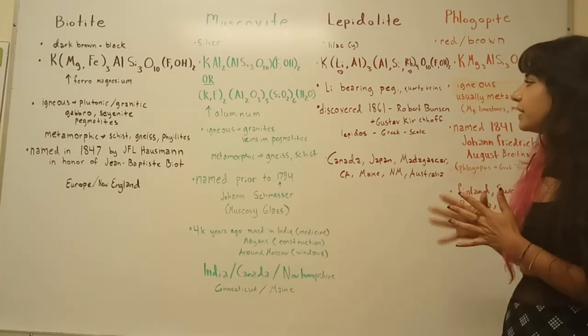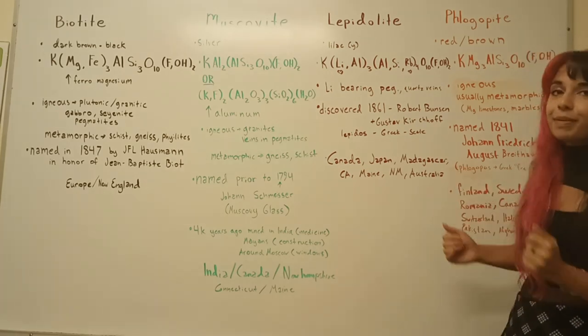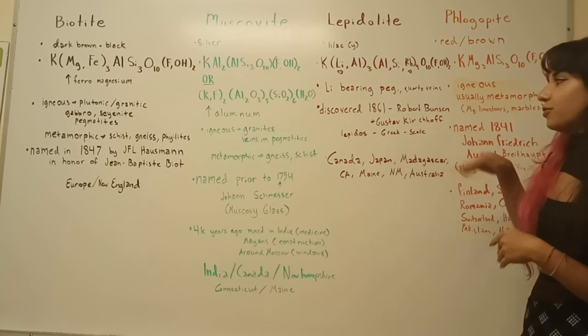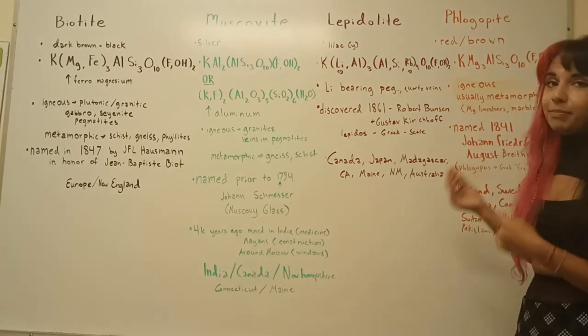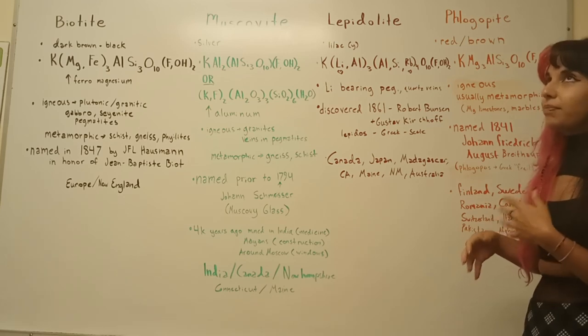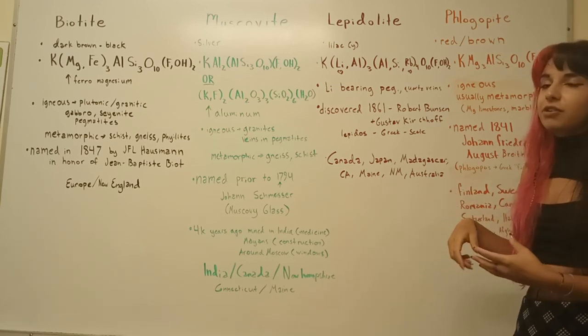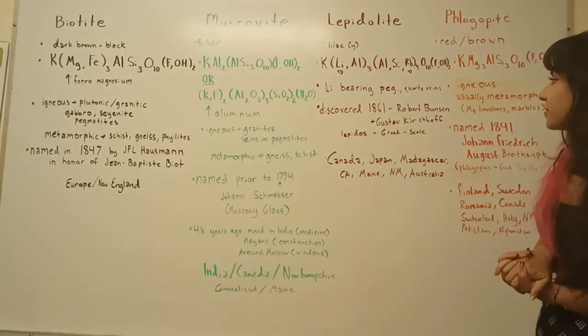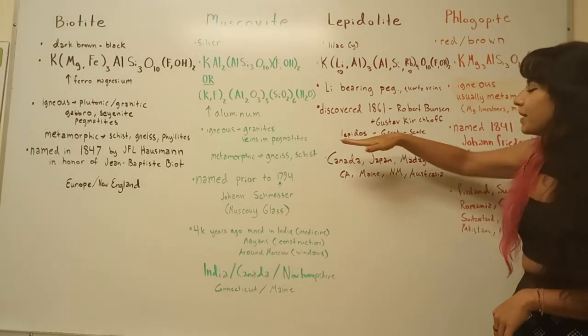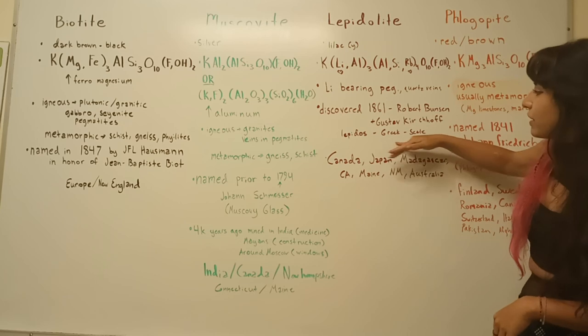This one was discovered in 1861 by Robert Bunsen and Gustav Kirchhoff. So that's a cool story, too. They were doing research on rubidium, and so they might have a bunch of lepidolite to extract that rubidium and it led to the actual discovery of rubidium. So cool things. And it comes from lepidose, which is Greek for scale.